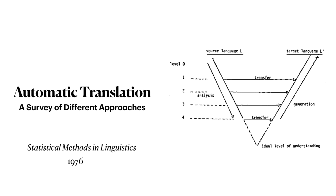If we go back to Bernard Vaquois's actual diagram, you see that at the bottom of his triangle, this is labeled the ideal level of understanding. Bernard Vaquois has dashed lines at this ideal level of understanding, indicating that he recognized that this was an ideal, but no one actually achieves it.